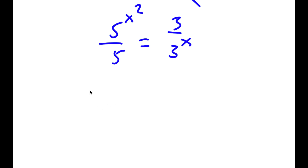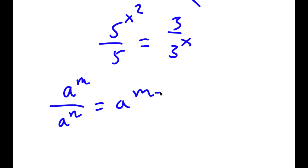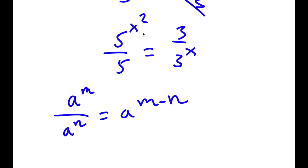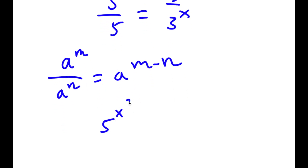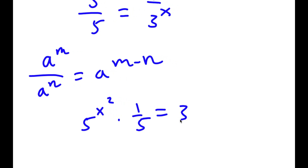Now if I have something in the form a to the power of m over a to the power of n, this is equal to a to the power of m minus n. Now 5 to the power of x squared over 5 is the same thing as 5 to the power of x squared times 1 over 5, which is equal to 3 times 1 over 3 to the power of x.